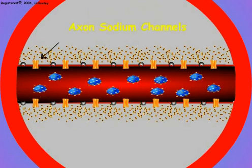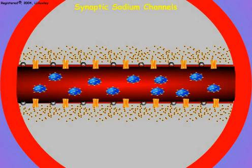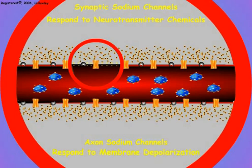However, sodium channels that open and close to allow sodium entry are present in both the axonal and postsynaptic membranes, and make the membranes electrically excitable. Synaptic sodium channels open in response to neurotransmitter chemicals. Axonal sodium channels open in response to negative depolarization on the outside of the axon membrane.